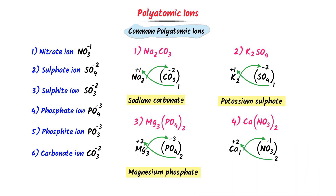Ca stands for calcium and NO₃ is the nitrate ion — giving calcium nitrate. Using this method, we can easily name any ionic compound having a polyatomic ion.